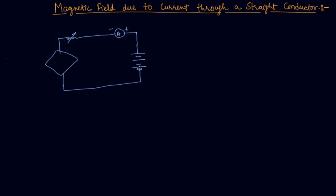So if the current is flowing in that direction and it is entering into the sheet like this, the magnetic fields in this rectangular sheet will be in circular directions.